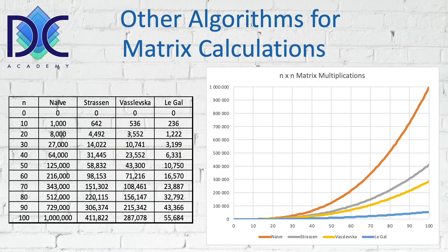There is the Strassen method. There is Vasslevska, and there is Legal. And when we look at those, we see, for example, that when we look at the naive and 100 times 100 matrix, we have to do 1 million calculations.